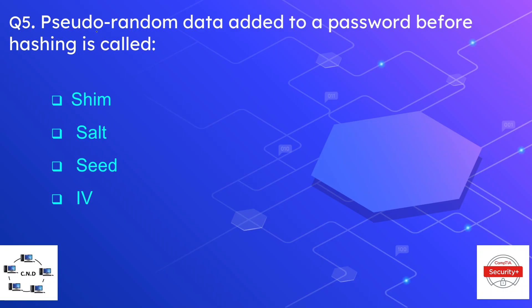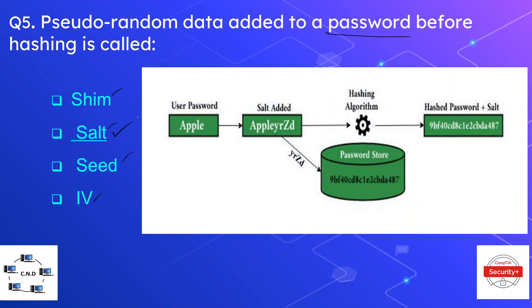Question number five: the pseudo-random data added to a password before hashing is called what? The options are frame, salt, seed, and IV. The correct option is again salt. Salt is the pseudo-random number that is added to a password before hashing.